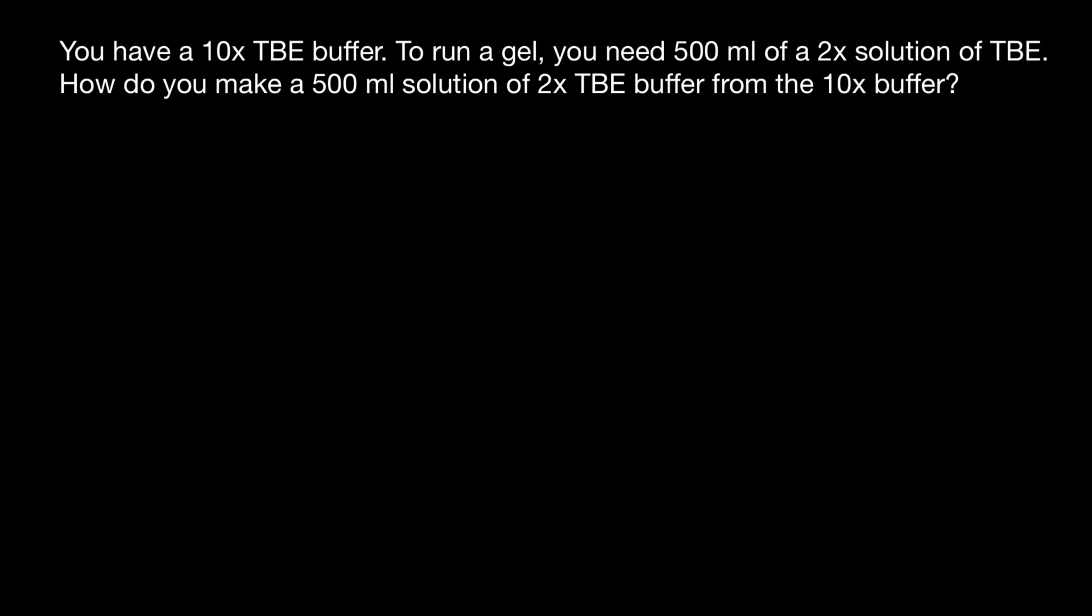Here's a problem. You have a 10X TBE buffer. To run a gel, you need 500 milliliters of a 2X solution of TBE. How do you make a 500 milliliter solution of 2X concentration TBE buffer from the 10X buffer?